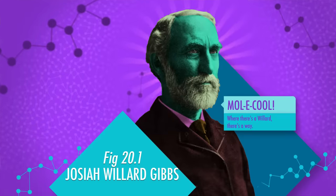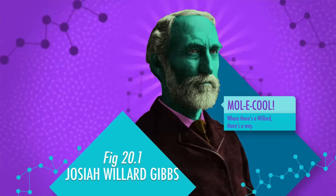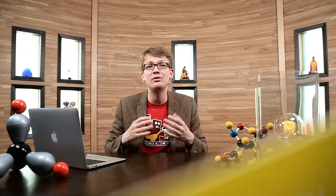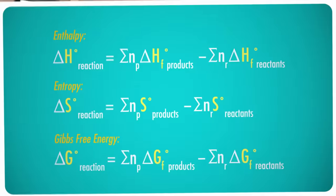But Josiah Willard Gibbs, he found a way to explain it, and he didn't even mean to. Gibbs was interested in the amount of energy in a system that was available or free to do useful work. Today, we call this Gibbs free energy, or sometimes the standard free energy, or simply free energy of the system. Like enthalpy and entropy, Gibbs free energy is a state function, so it can be calculated the same way.